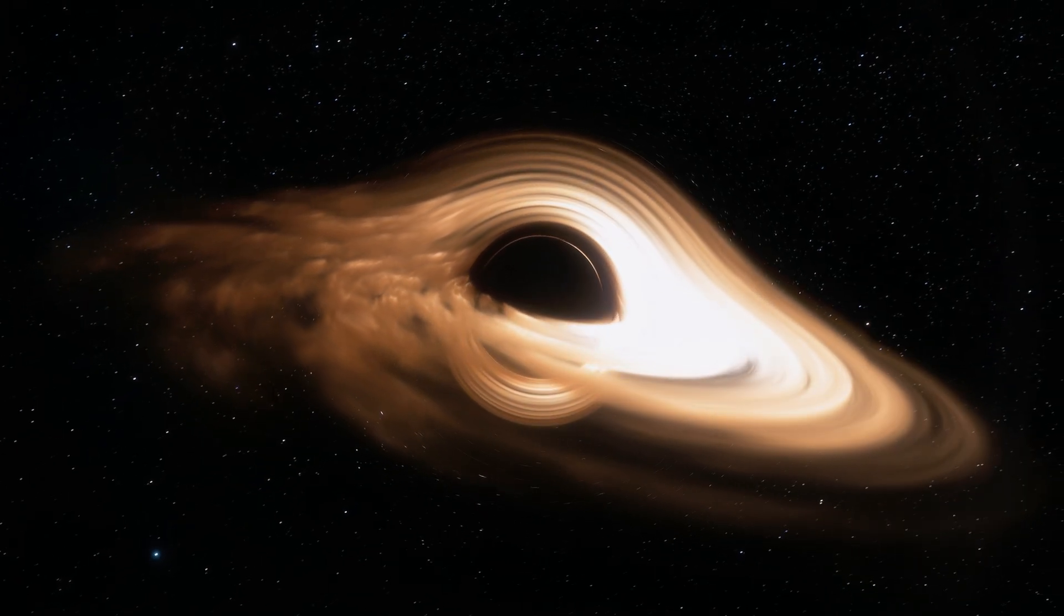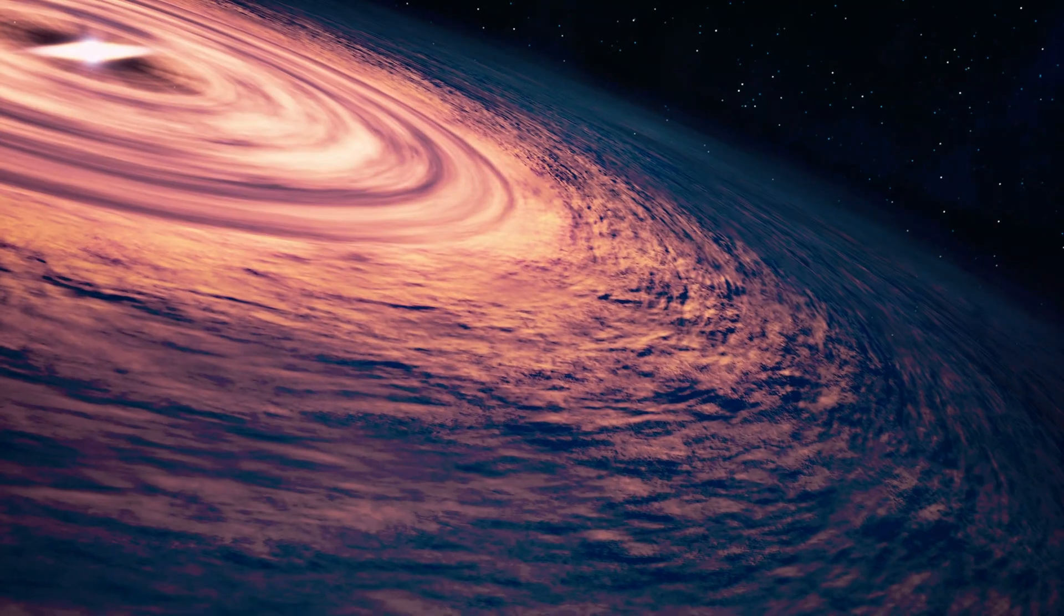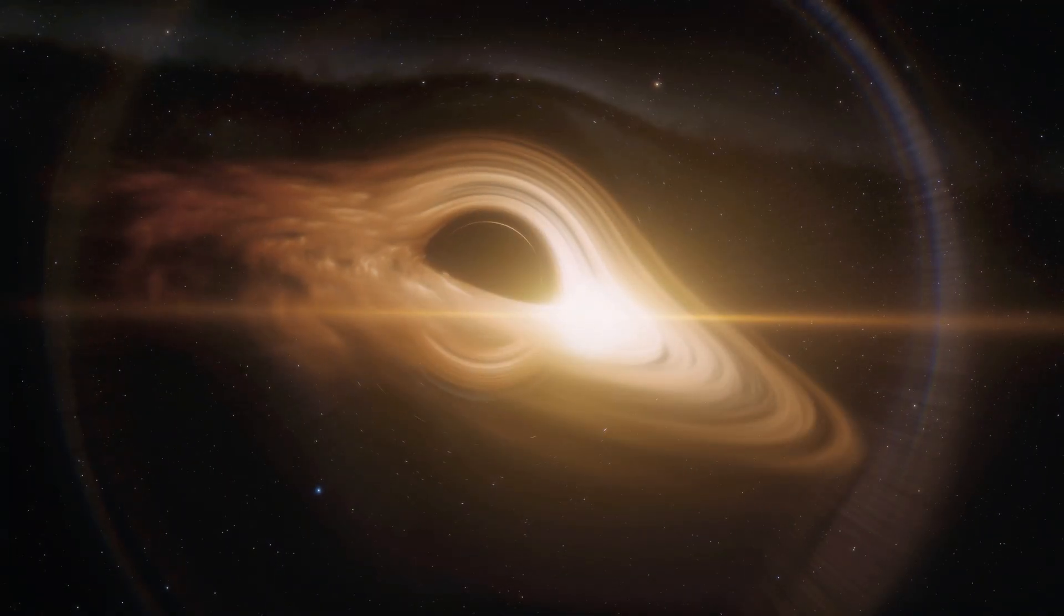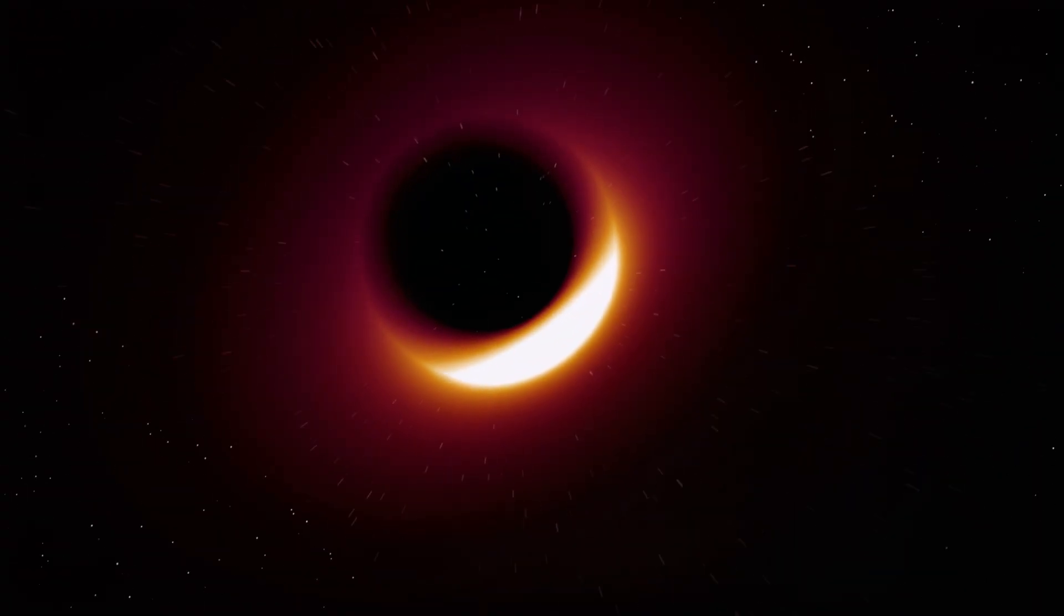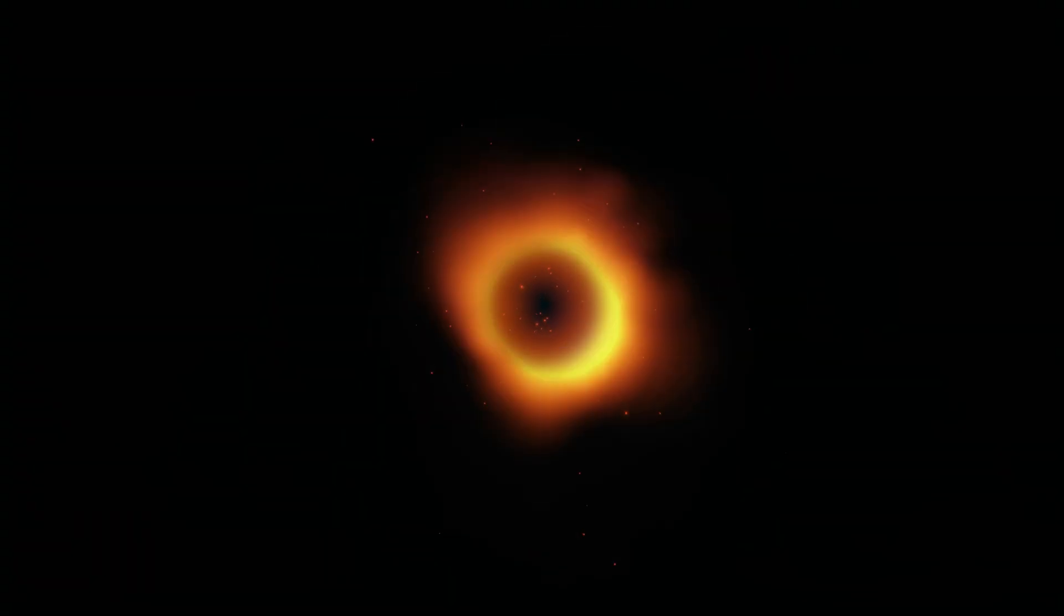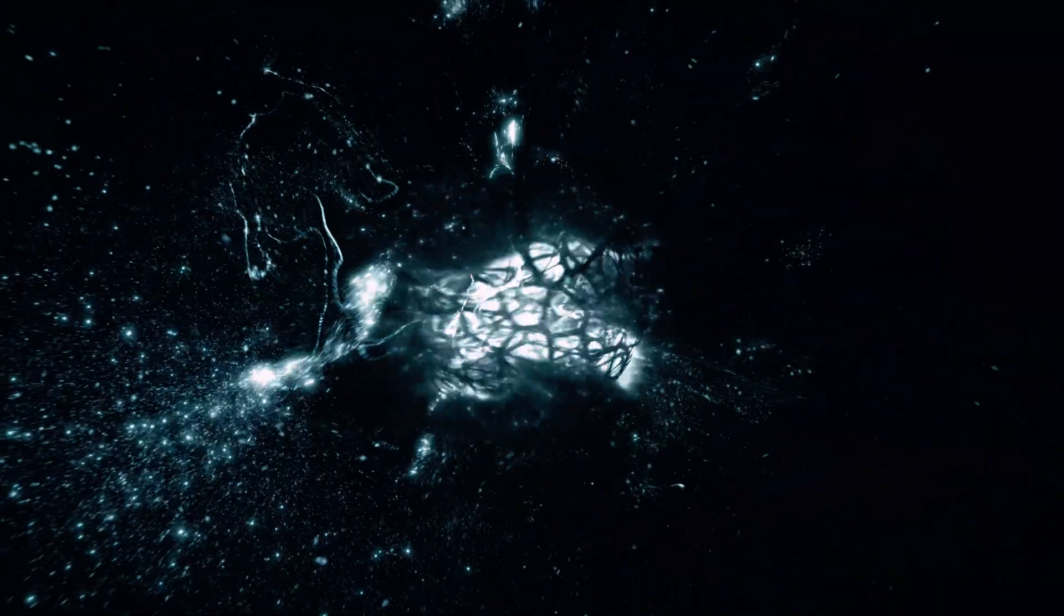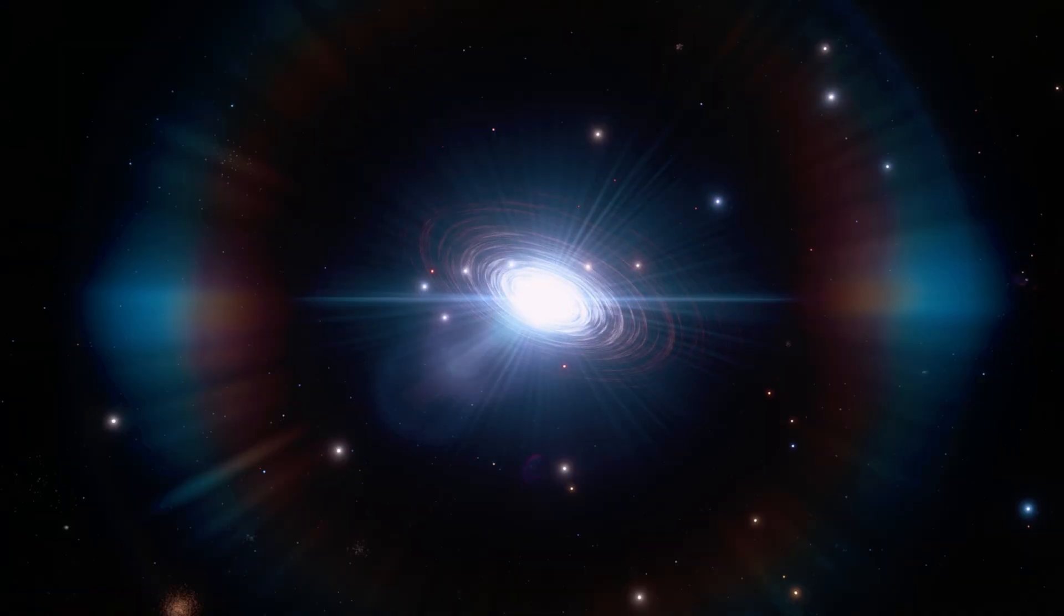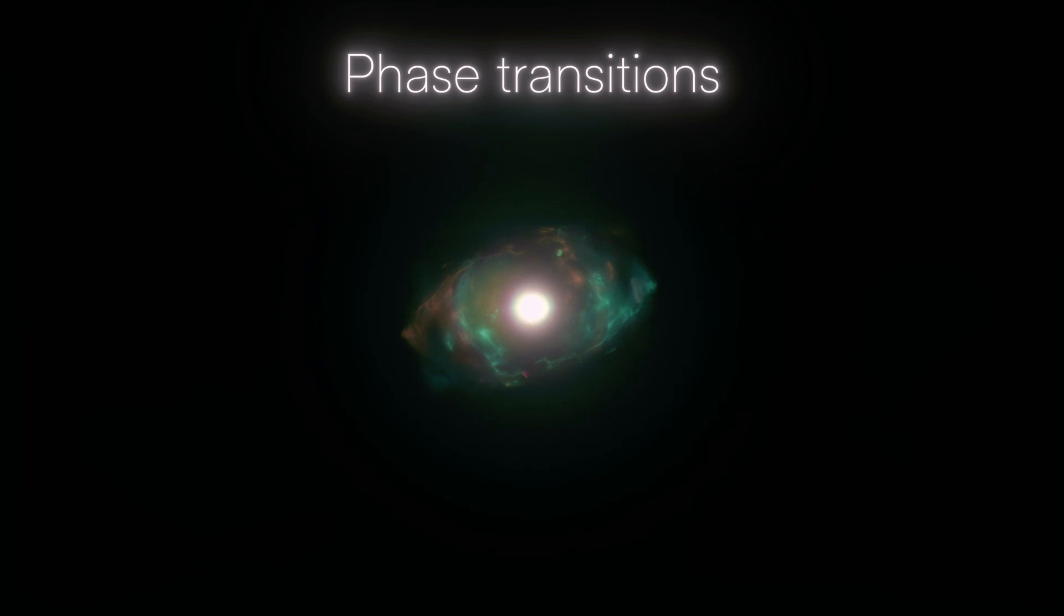One key characteristic of black holes is that they can evaporate over time through a process known as Hawking radiation. Stephen Hawking proposed that black holes emit radiation from their event horizons, causing them to slowly lose mass and eventually evaporate completely. Lighter black holes evaporate faster than heavier ones, meaning primordial black holes, if they were small enough, might have already disappeared. The authors of the study suggest that these evaporating primordial black holes would have created local disturbances in the Higgs field. In other words, they would have acted like seeds for the dangerous bubbles of false vacuum we discussed earlier. The energy released by these black holes would have nudged the Higgs field, triggering phase transitions in small, localized regions.